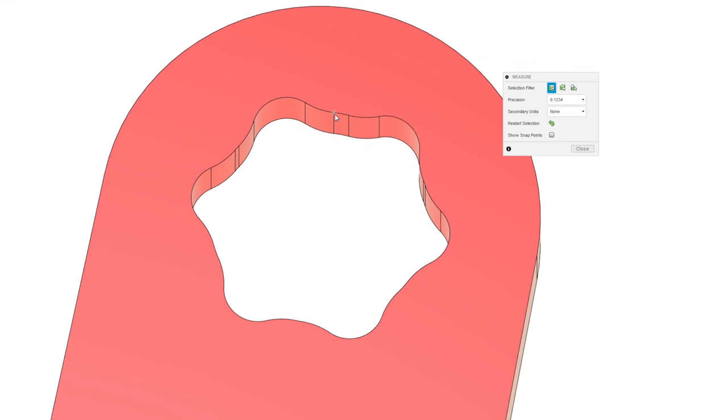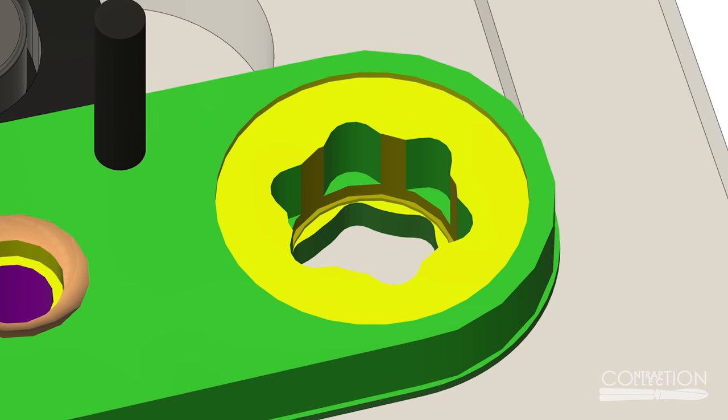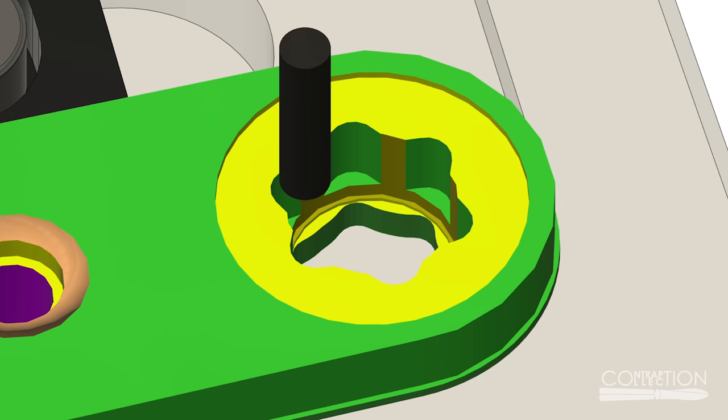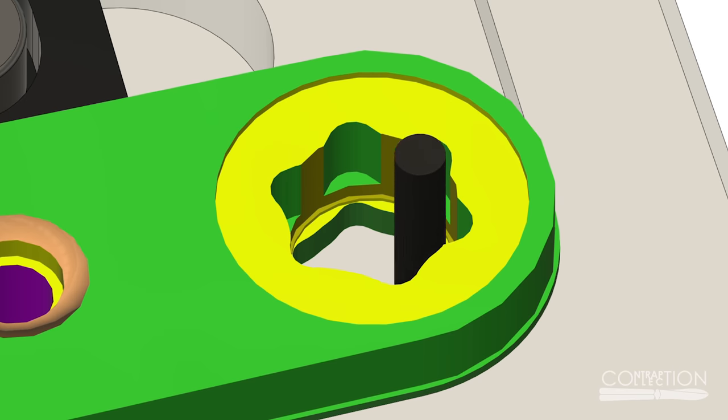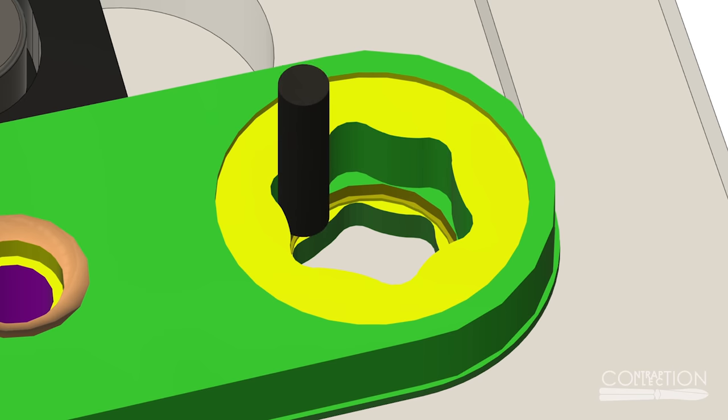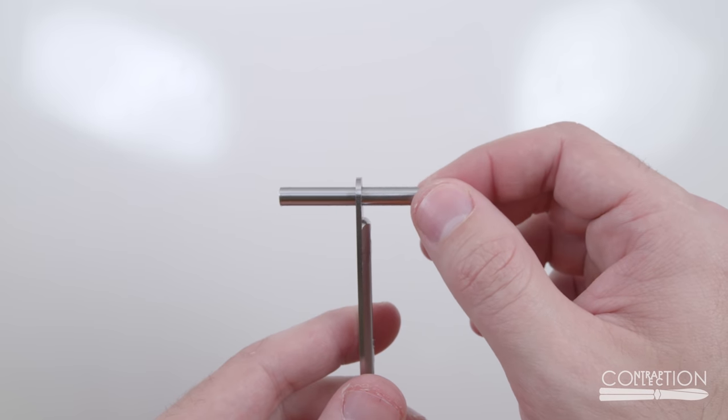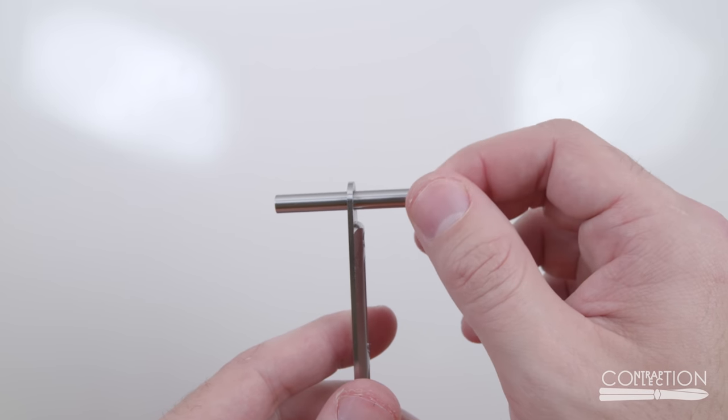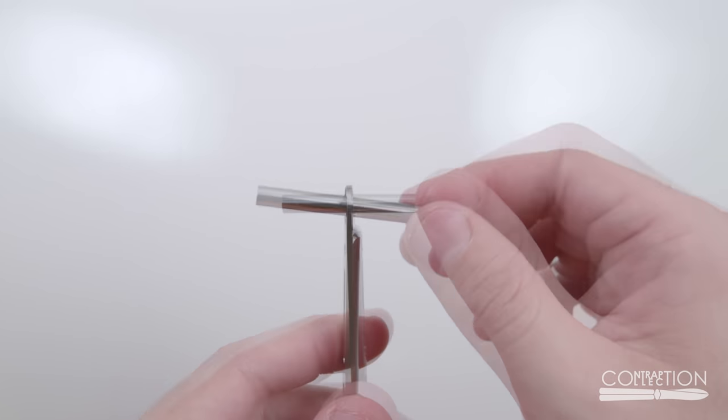I'm worried the pads that the pins rotate against are so small that my machine isn't able to accurately machine them, or maybe they're so small even the small adjustments I make just end up destroying them completely. I was also worried that even if I could get a good fit with them, it wouldn't take much wear for them to become a bad fit.